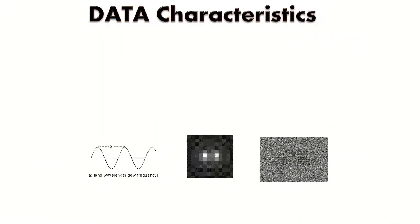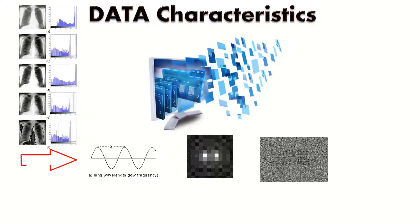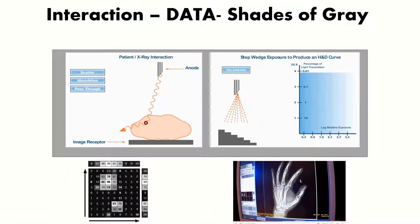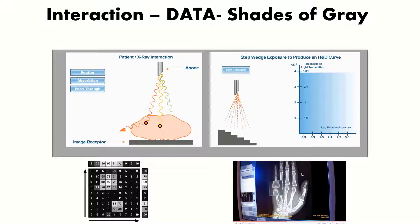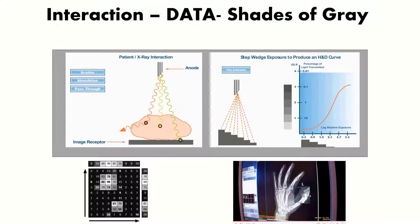Let's now look at the primary characteristics of the data we've collected. They are the frequency of the data, the contrast of the data, and the signal-to-noise ratio of the data. We use the characteristics of the data and where it's stored to show our original image or to manipulate or post-process the image.